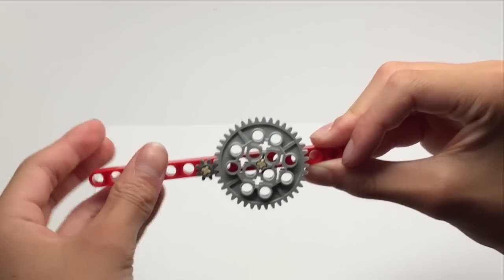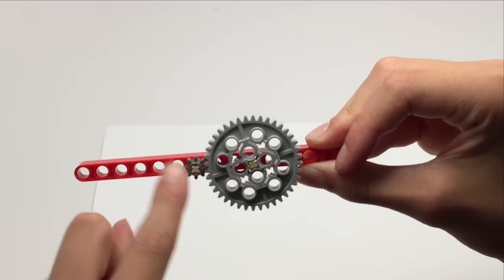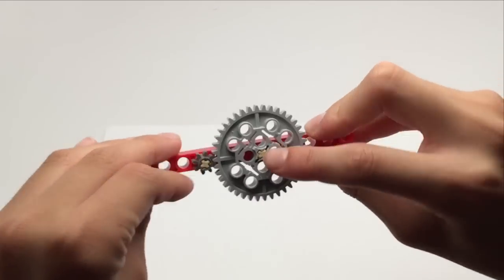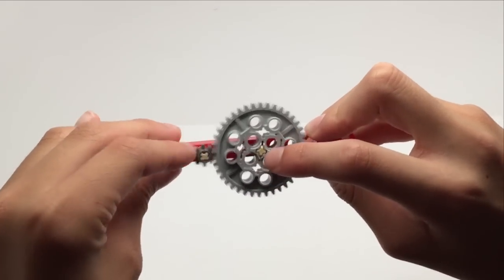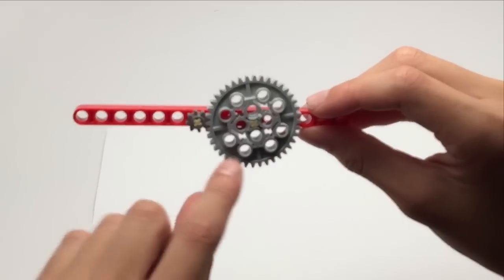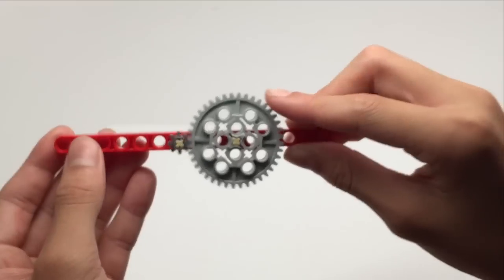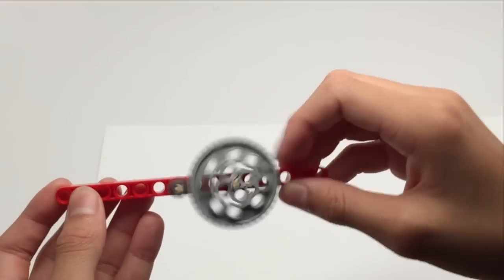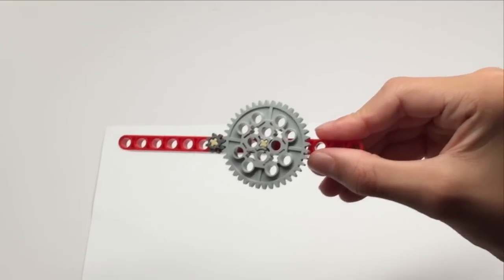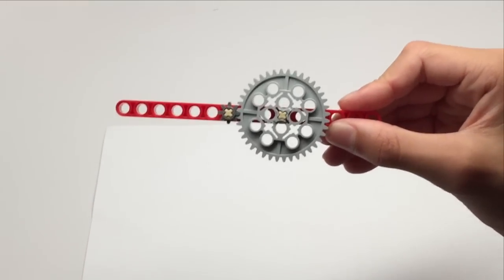This means that when your power source is at the smaller gear, the power source that comes out of this gear will slow down a lot. Whereas if you connect the power source to this gear, the power source from here will be a lot faster. And you can actually calculate how much you're speeding up or how much you're slowing down.